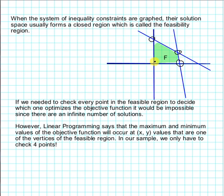So we can find the x and y coordinates of the vertices and substitute those into our objective function and decide which one provides the max and the min.